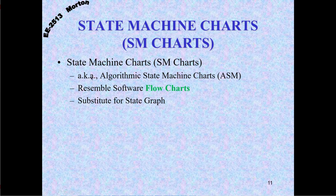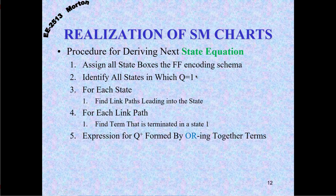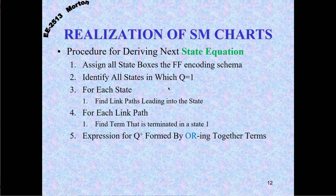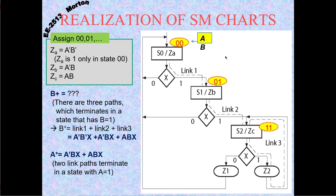State machine charts can also be called algorithmic state machine charts, or ASM charts. To write equations from an SM chart, you assign a flip-flop encoding scheme to each state box. Here we have three states encoded with two flip-flops A and B: S0 is A=0, B=0 (coded A'B'); S1 is A=0, B=1 (coded A'B); S2 is A=1, B=1 (coded AB).